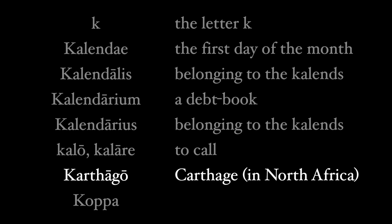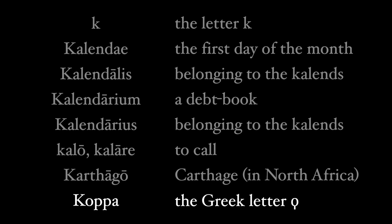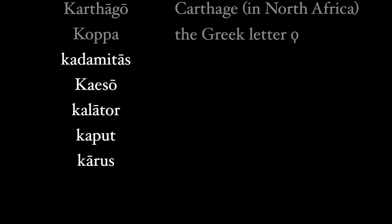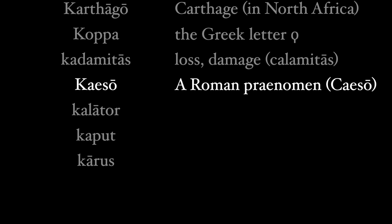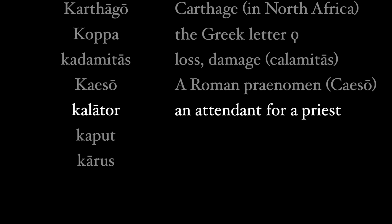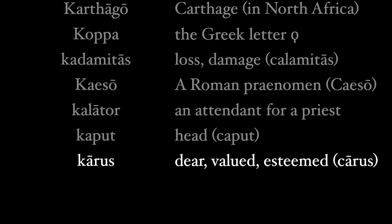Then Cartago, the Latin name for the city Carthage in North Africa. And finally the word Koppa, which is an original letter of the Greek alphabet, roughly equivalent to the letter Q. The Oxford Latin Dictionary has these words and a few others: Cadamitas, an alternate form of Calamitas; Caiso, a Roman praenomen that is often spelled with a C; also Calator, an attendant for a priest related to the verb Calo; Kaput, an alternate form of Caput with a C; and likewise Karrus, an alternate form of Carrus with a C.